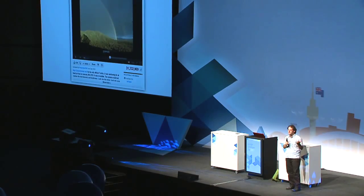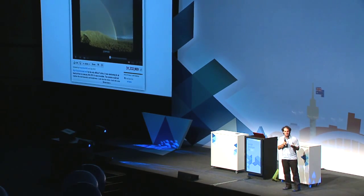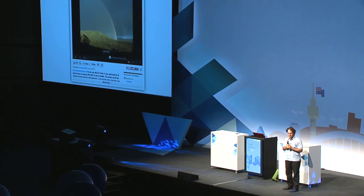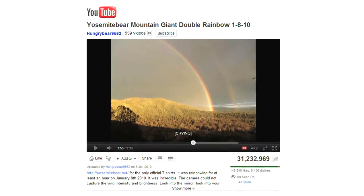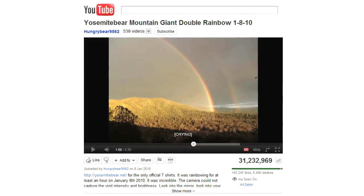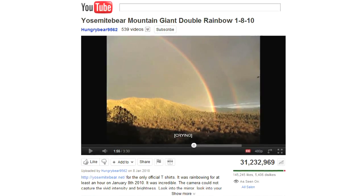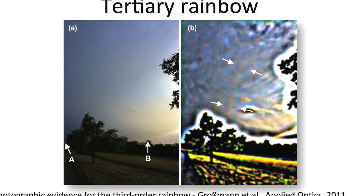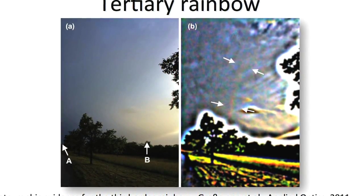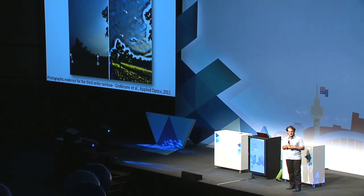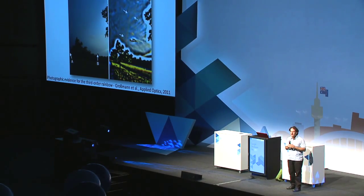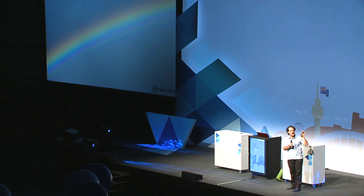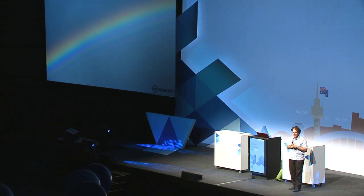Now that we have the basics of a standard rainbow, I'll go into some more exotic forms. The double rainbow, recently famous from a popular YouTube clip, is apparently quite a life-changing experience. A double rainbow is simply caused when light bounces twice inside the raindrop rather than once. Tertiary rainbows occur when the light bounces three times. For a long time these were thought not to exist in nature, and only this year was photographic evidence found of a tertiary rainbow. They're particularly hard to see because you have to look in the direction of the sun rather than away from it.